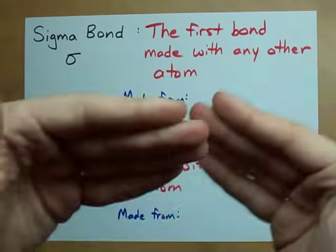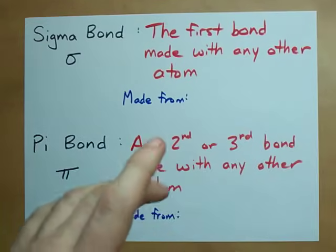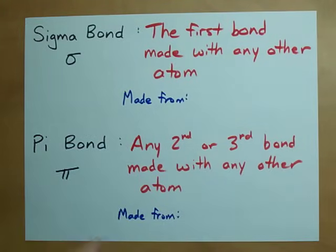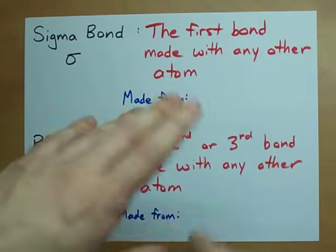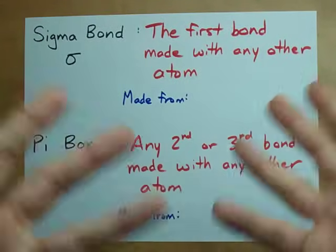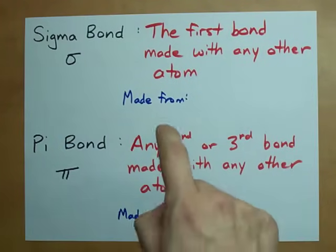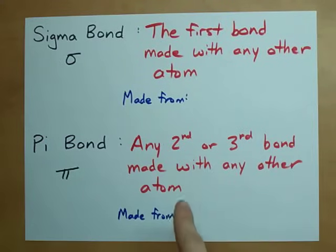If the carbon makes multiple bonds with an atom, like a carbon-carbon double bond, or a carbon-carbon triple bond, a carbon-nitrogen triple, I don't care what it is, any second or third bond it makes with an atom, those are going to be pi bonds.